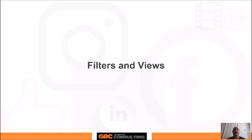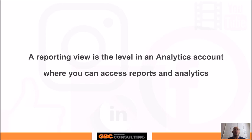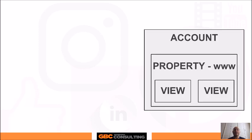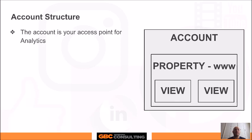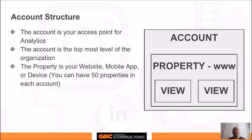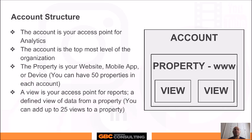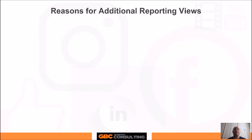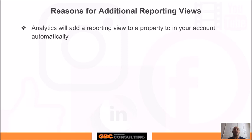In my first video we helped you set up your Google Analytics account, and now we're going to set up filters and views. A reporting view is the level in the analytics account where you can access reports and analytics. Your account is your access point for analytics — the topmost level of the organization. Your property is, for example, your website, mobile app, or device. You can have 50 properties in each account, and your view is your access point for reports — a defined view of data from a property. You can have up to 25 views per account.